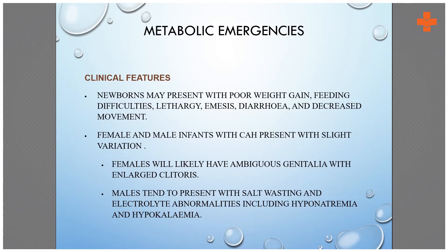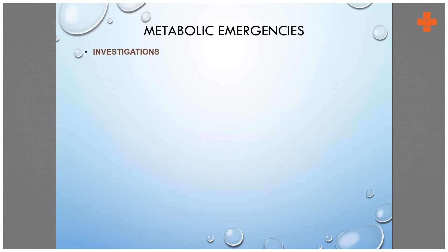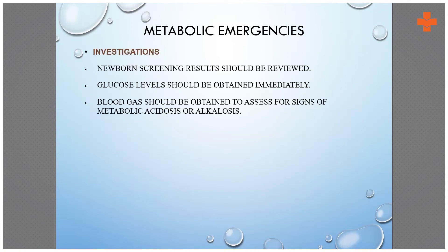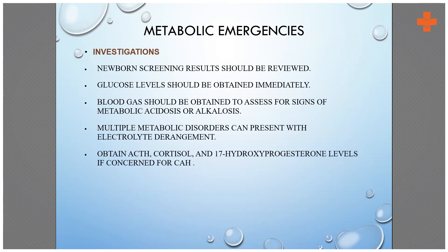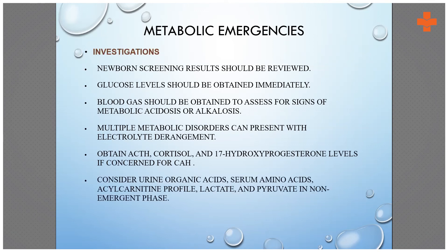Female and male infants with CAH present with slight variations. Females will likely have ambiguous genitalia with an enlarged clitoris. Males also present with salt wasting and electrolyte abnormalities including hyponatremia and hyperkalemia. Investigations include glucose levels, blood gas levels, metabolic panels to rule out inborn errors of metabolism, electrolyte derangements, ACTH and cortisol levels, amino acid levels, and lactate levels.